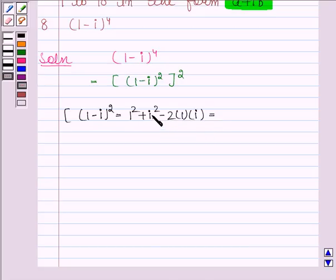Iota square is equal to minus 1. So we have 1 minus 1 minus 2 iota and this is equal to minus 2 iota. So square of 1 minus iota is equal to minus 2 iota.